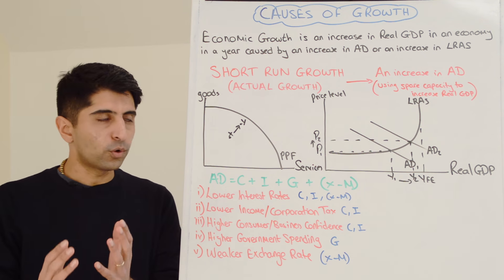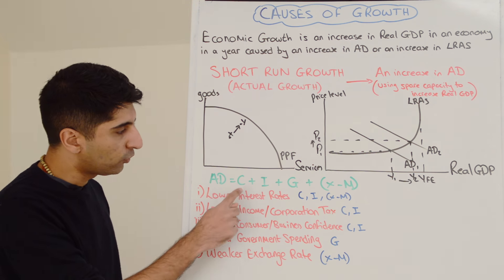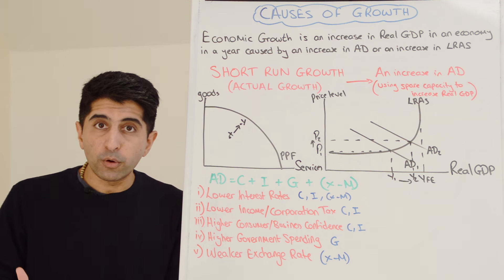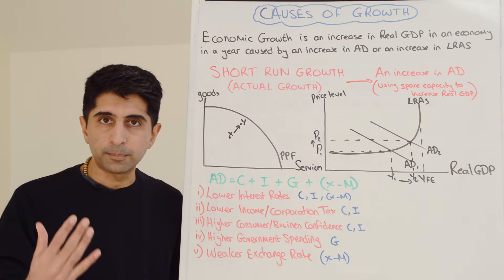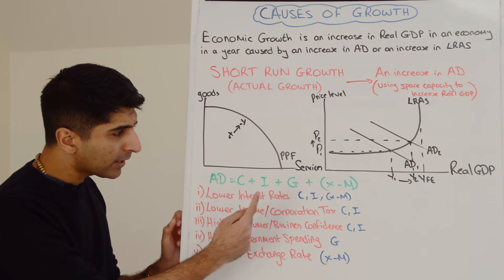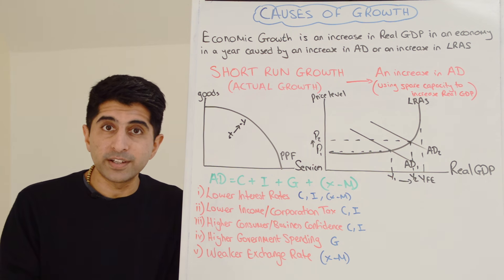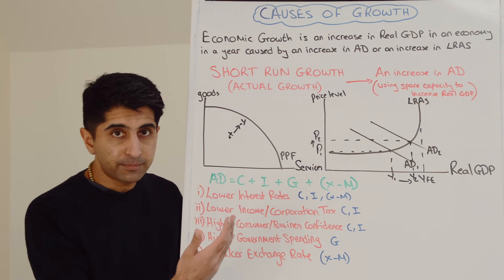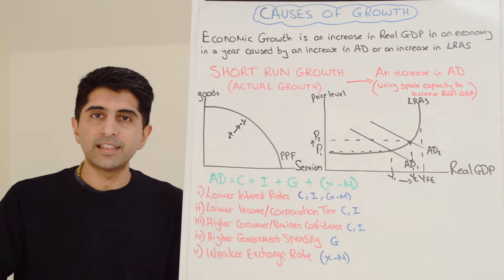Now let's look at specific causes of short-run or actual growth. Using the AD equation: AD = C + I + G + (X - M). Lower interest rates make it cheaper for consumers and businesses to borrow, increasing C and I, and can weaken the exchange rate boosting X minus M. Lower income tax raises disposable income, increasing consumer spending. Lower corporation tax raises retained profit for firms to invest. Higher consumer or business confidence increases C and I respectively. Higher government spending increases G, and a weaker exchange rate boosts X minus M.